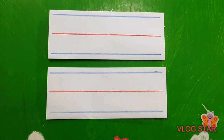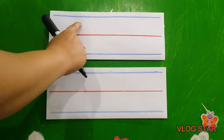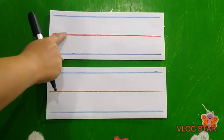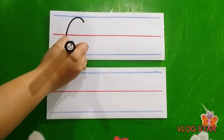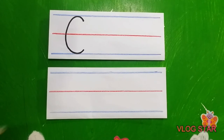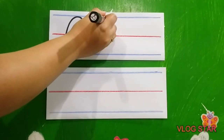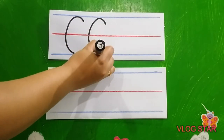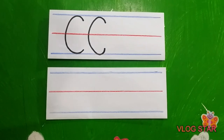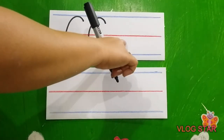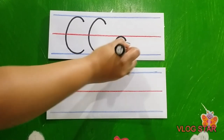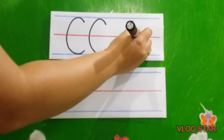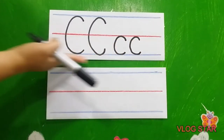Now I'm going to show you how to write the letter C and the letter D. Let's start with the letter C — you just have to make a curved line. Curve line. One more time, make a curved line. Now let's go with the small letter C — make a small curved line, start here, small curved line going down. Again, curve line. See?